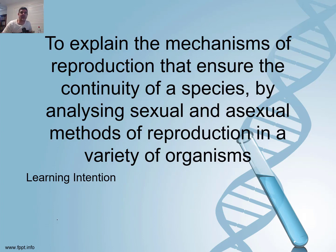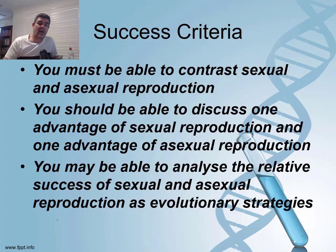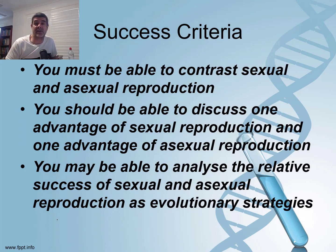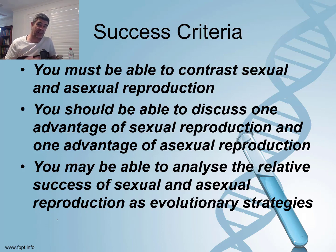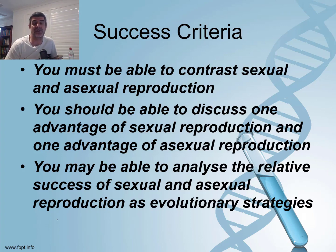For now, we just want to set the stage with a bit of an overview. There are three levels for you to be aiming for: first, to be able to contrast sexual and asexual reproduction from your junior science days; second, to discuss one advantage of sexual reproduction and one advantage of asexual reproduction as specific strategies for different types of organisms; and third, to analyse the relative success of each of these strategies as evolutionary strategies.